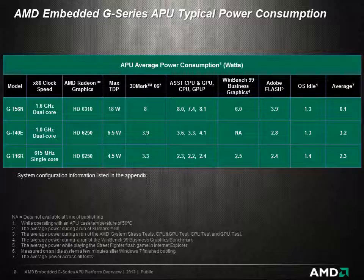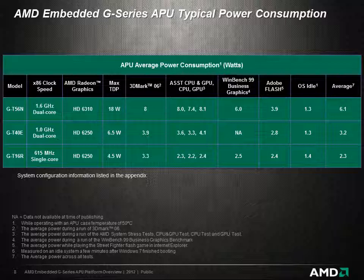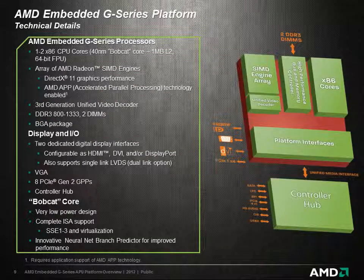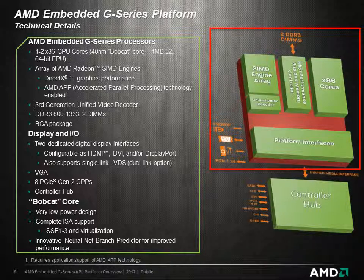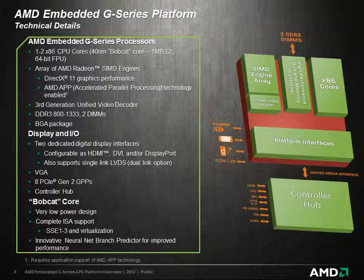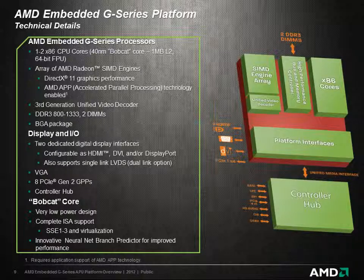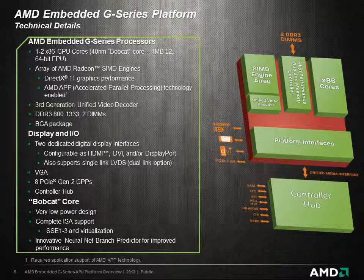So when evaluating the thermal requirements and power limits of a system, it is important to consider and test the power consumed while running the actual application. The AMD G-Series platform is built around the APU and the I/O controller hub. The APU consists of up to two low-power Bobcat x86 CPU cores, balanced with a low-power DirectX 11 stream-enabled SIMD array and a third-generation universal video decoder block, connected by a high-performance bus to a single channel of DDR3 memory and multiple analog and digital display interfaces.